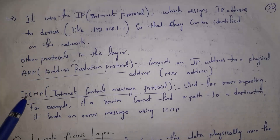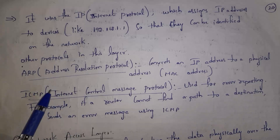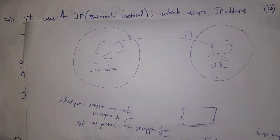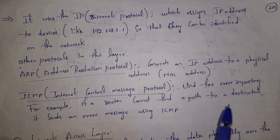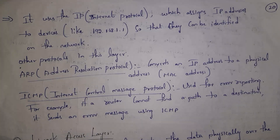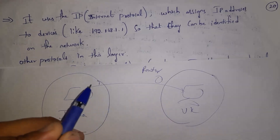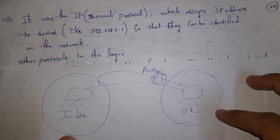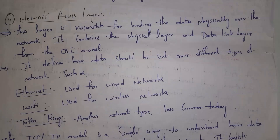Along with IP, the Internet Layer also contains two other protocols: ARP and ICMP. ARP stands for Address Resolution Protocol and ICMP stands for Internet Control Message Protocol. ARP converts an IP address into a physical MAC address — every device has a MAC address to identify it. Data is transferred using IP address first, then converted to MAC address so the receiver can read the data. ICMP gives error messages — for example, if data reaches a router but the router cannot find the device, ICMP will give an error like 'device not found.'